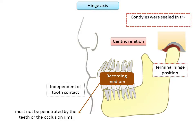Cohen in 1960 described an instrument termed the hinge axis trainer, which was used to train patients to open and close the mandible in the hinge manner so that the jaw moves along the same arc of closure. The position of the condyle during this movement was not a recruited or forced position, but rather one where the condyles were seated in the glenoid fossa as far posterior as they could go by their own muscular power — essentially a natural physiological position.